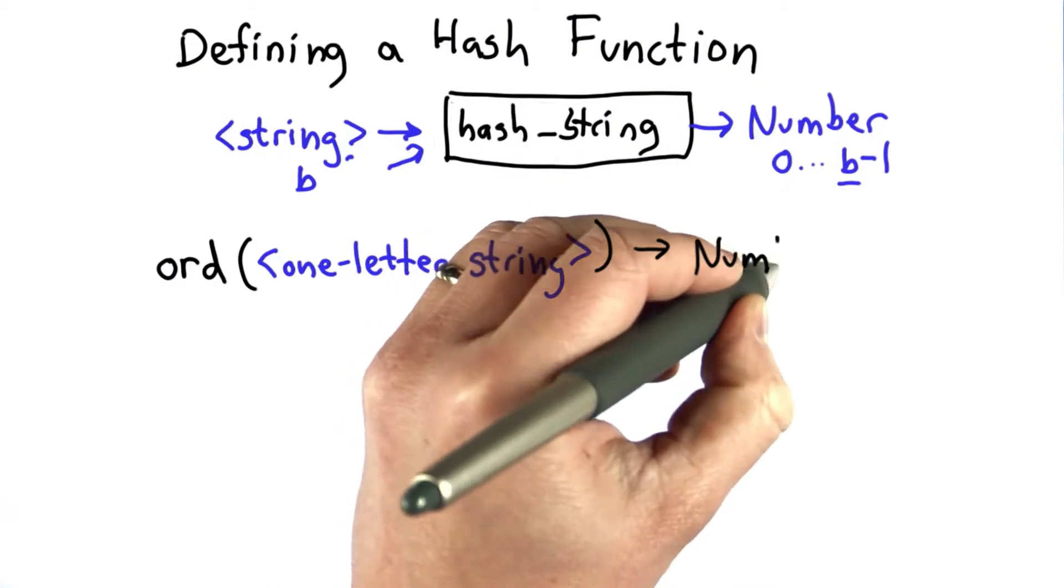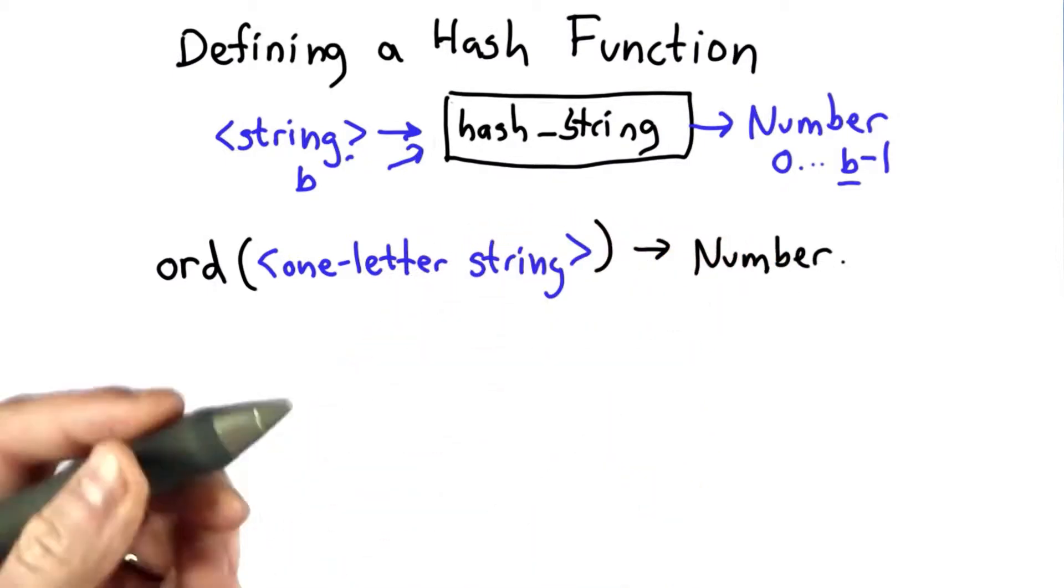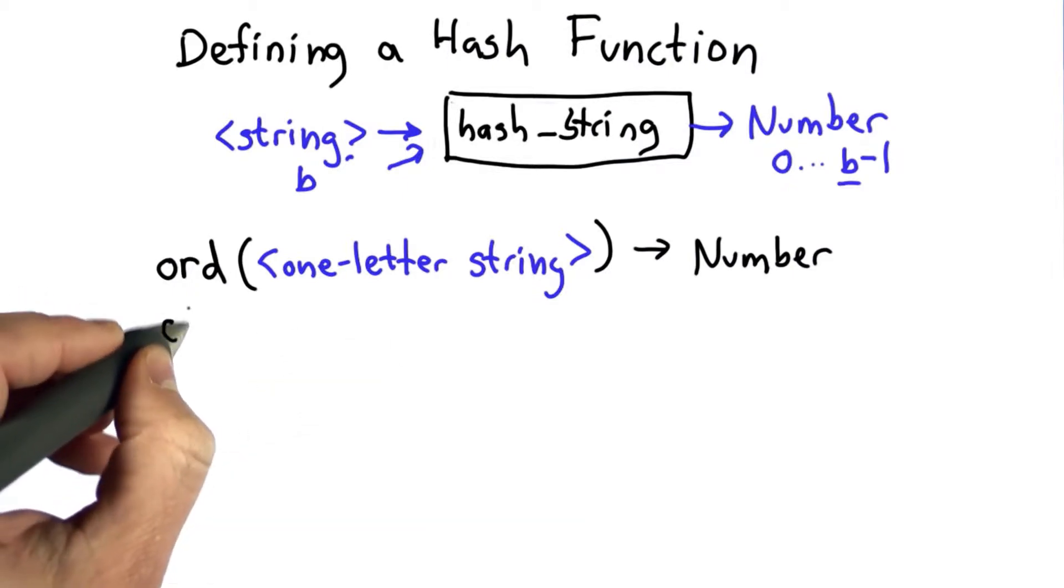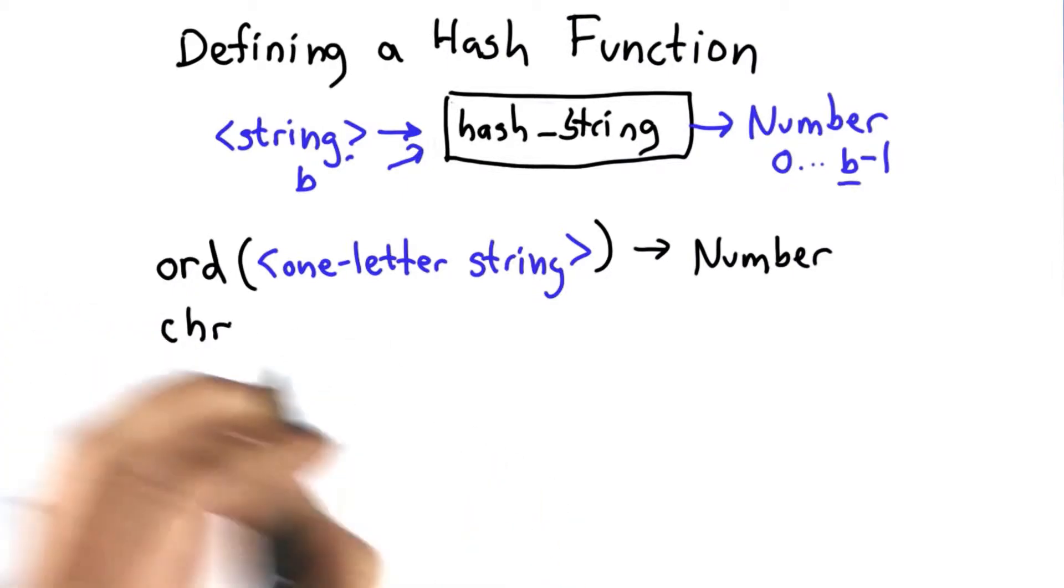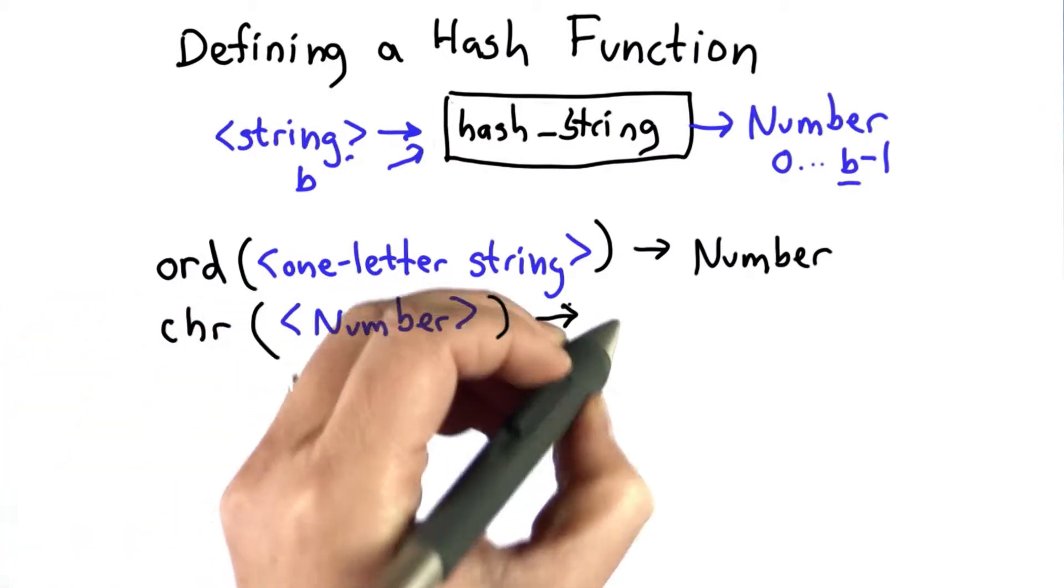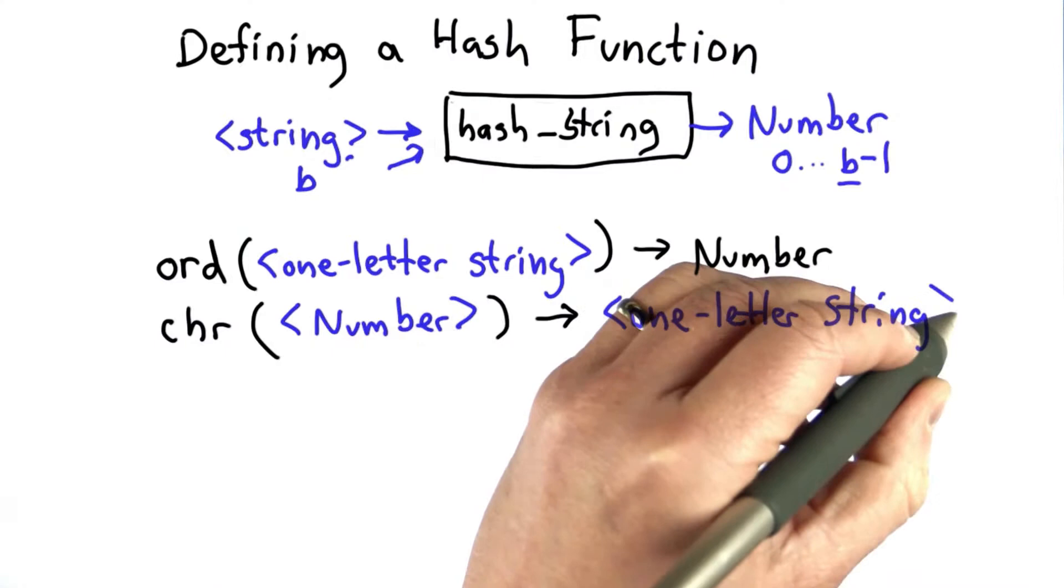And the actual mapping between strings and numbers is not so important. We just want something that's going to map different strings to different numbers. There's another operator that goes in the opposite direction that takes in a number and outputs the one letter string that corresponds to that number.